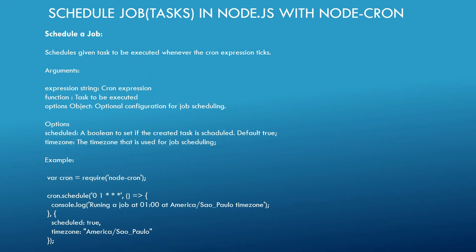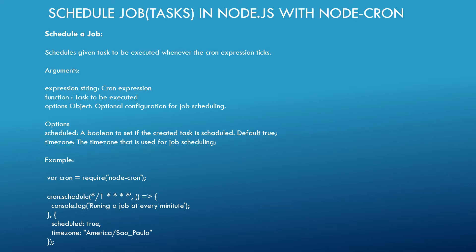Based on your requirement, you can adjust the cron expression. Let's see more details on the node-cron module methods. The first one is scheduling a job — cron.schedule() — which schedules a given task to be executed whenever the cron expression ticks. Arguments are: expression (a cron expression string), function (the task to execute), and an optional options object. One option is 'scheduled' — a boolean, default true.